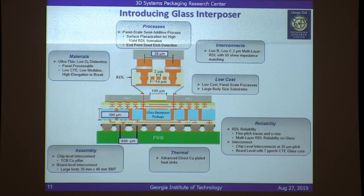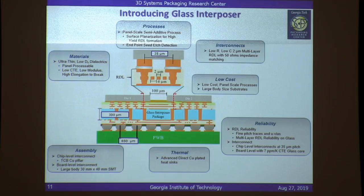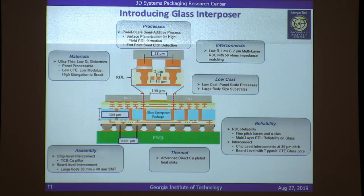The idea is as follows: you take a piece of thinned glass — 300 microns thick, for example — which is an insulating material, unlike semiconducting silicon. That gives it nice properties at higher frequencies. You drill holes through it using a laser, metallize them, then laminate polymer layers on either side and metallize the top and bottom layers to create redistribution layers, or RDLs. Then you assemble ICs on top at very fine pitch — down to maybe 10 microns or less — and mount it on a printed wiring board.